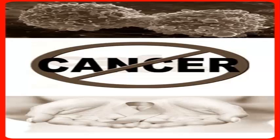In each cell is information that determines when the cell should divide and when it needs to stop. This information is at the core of each body cell and is passed down from parent to child. This genetic material is called DNA. DNA contains several pieces of information that are called genes.